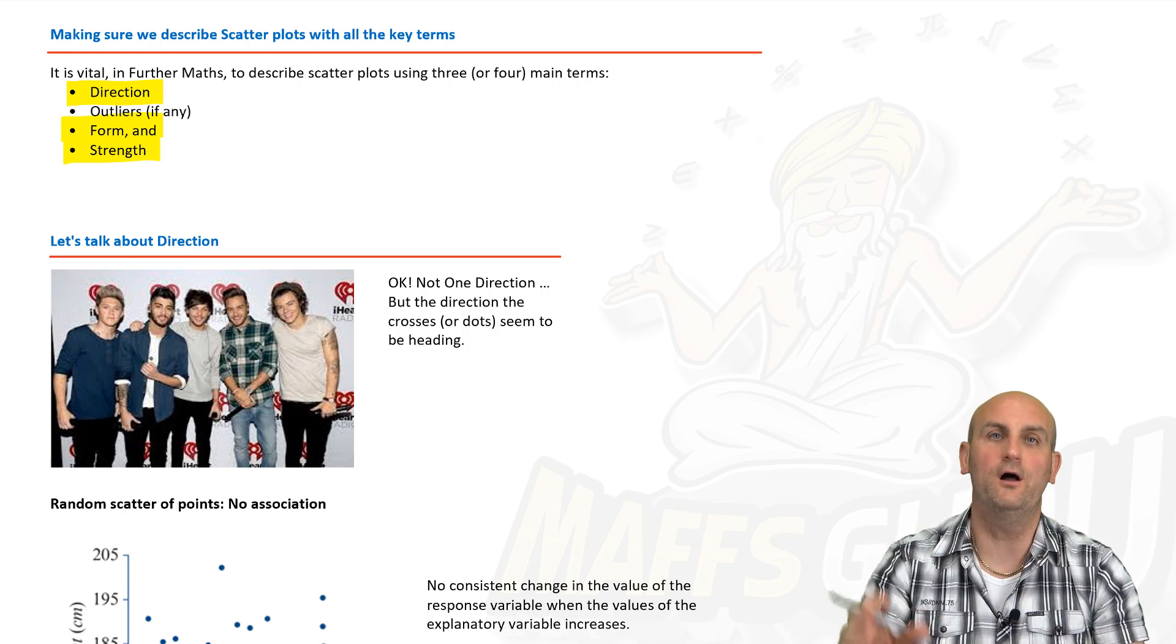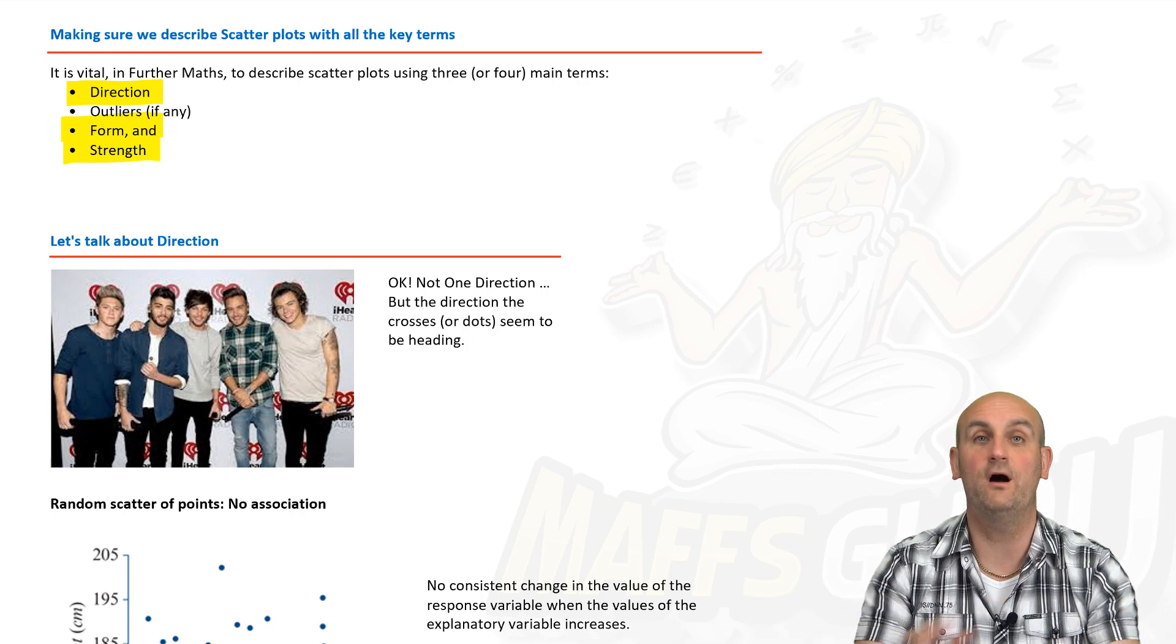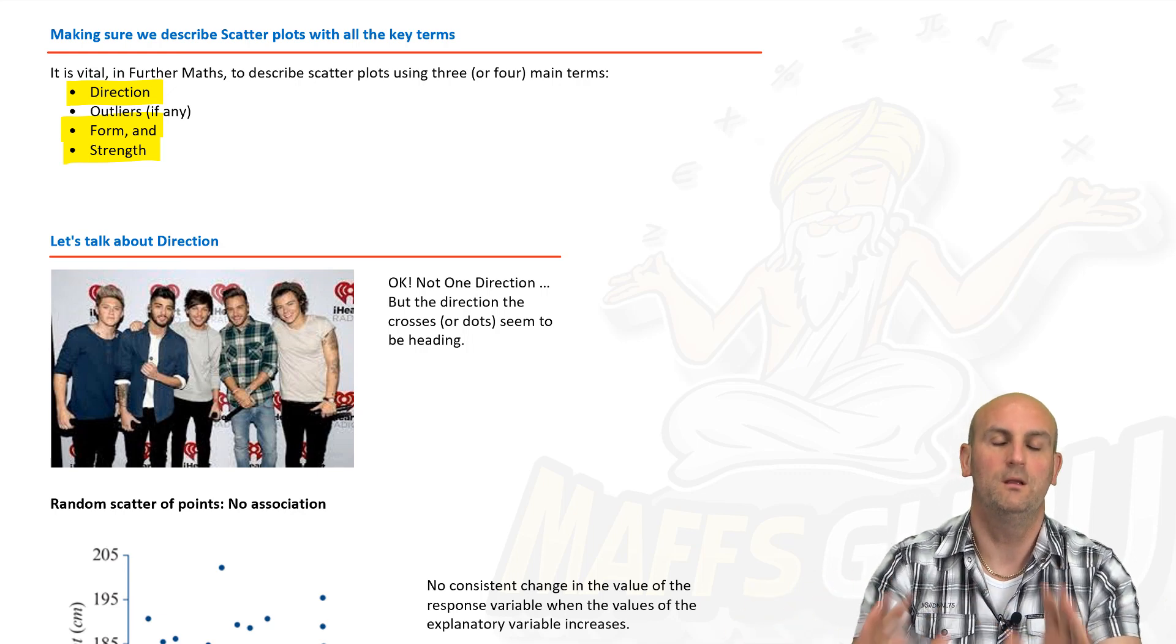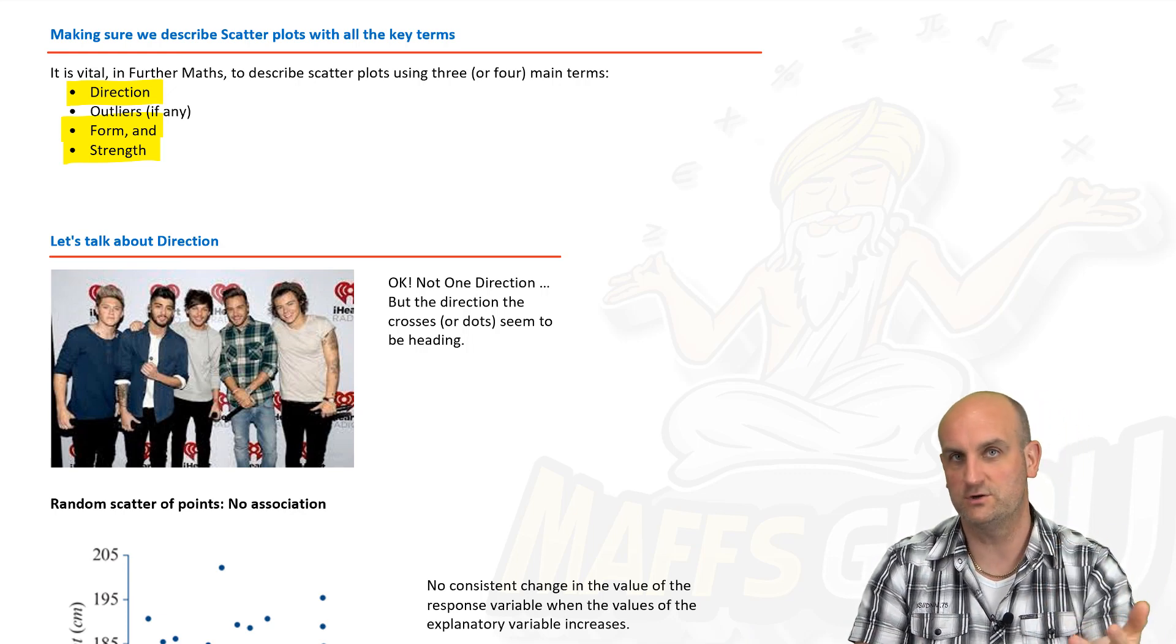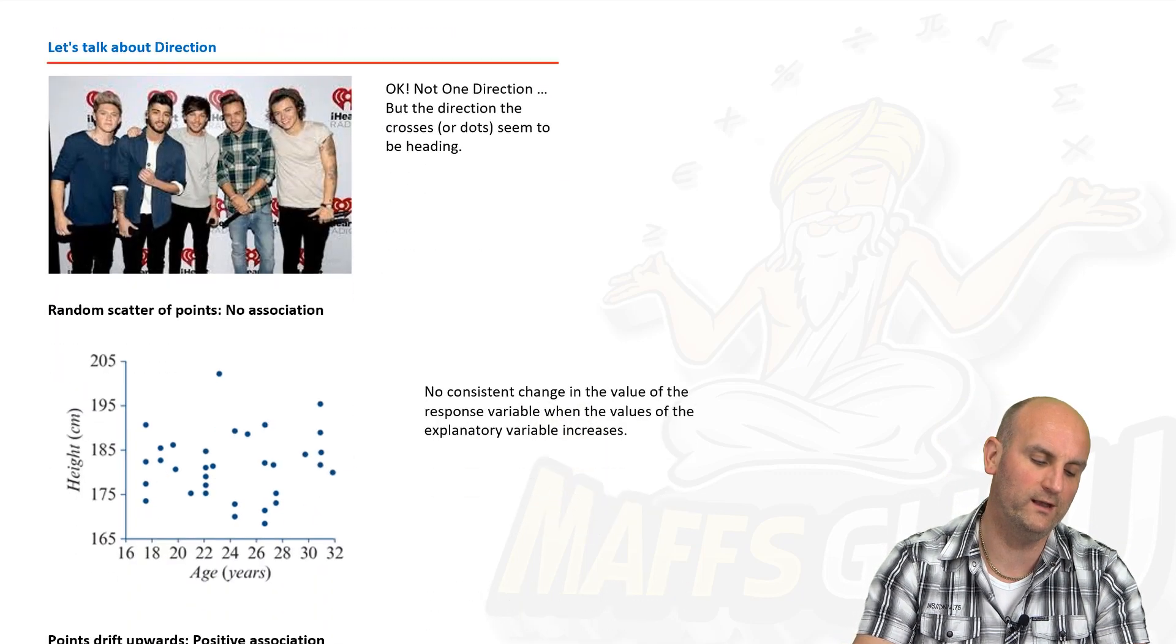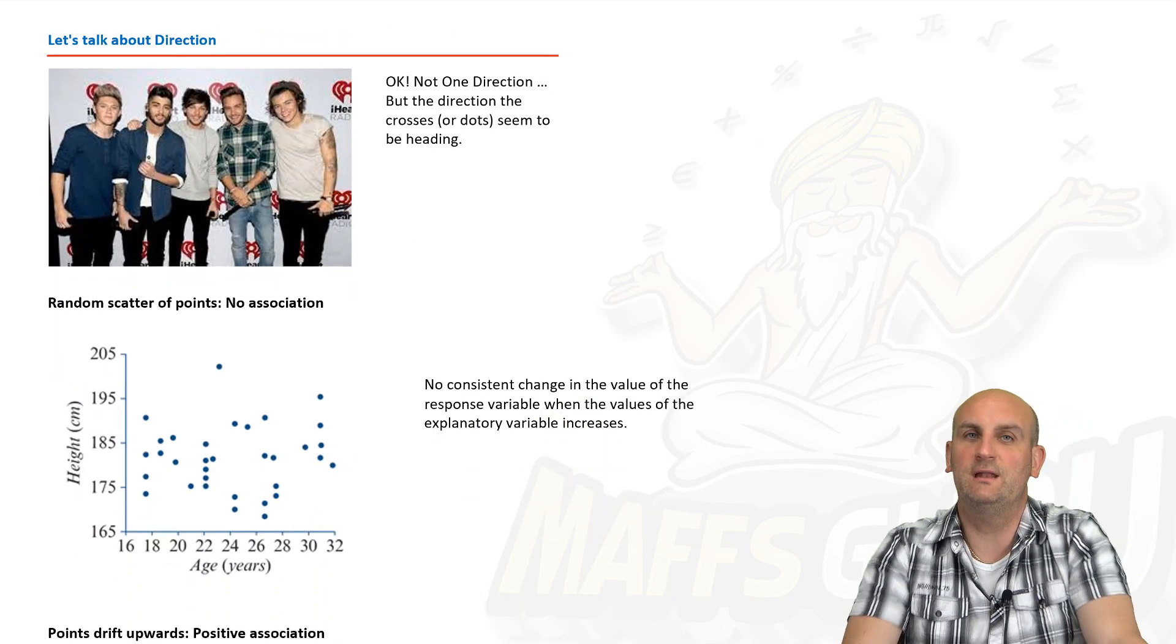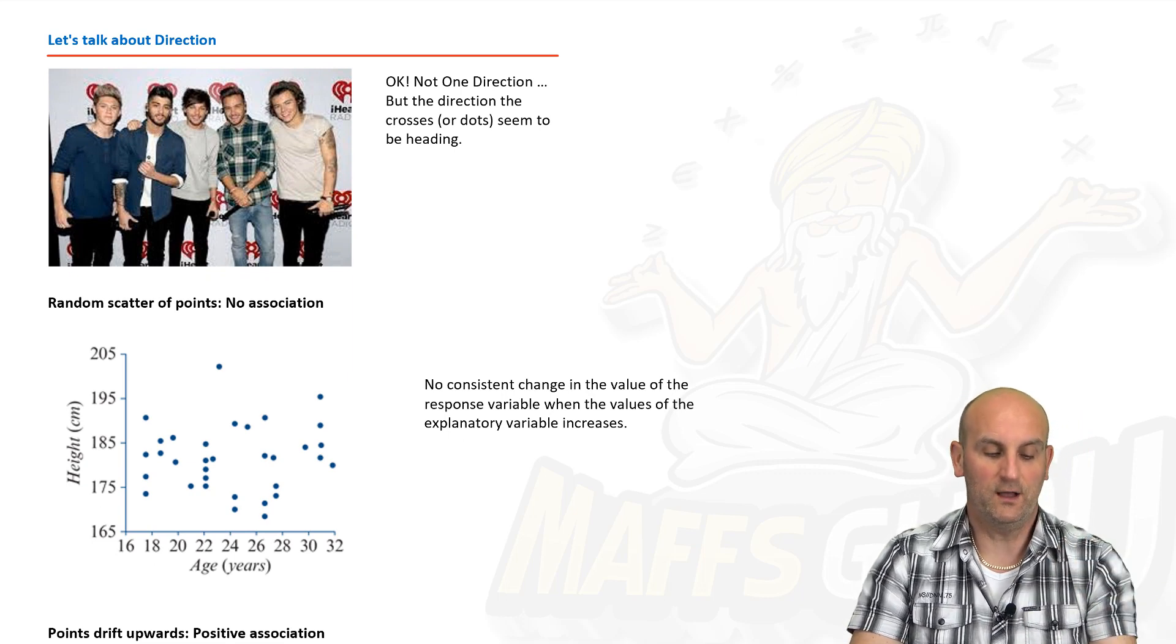So, you'll generally say there are no clear outliers or there are outliers. If there are outliers, you'll give an example of one. But let's not rush ahead. So, we're going to deal with these in turn. Direction, form, strength. Come back to outliers. So, let's talk about direction. Not one direction. The puns don't get any better. I know. I'm sorry.